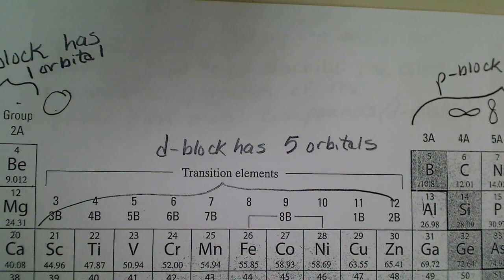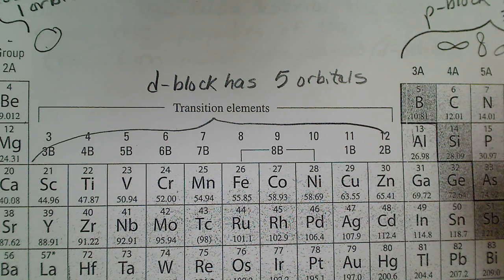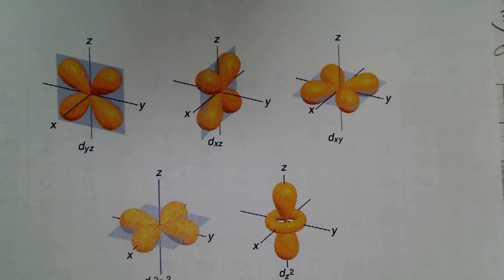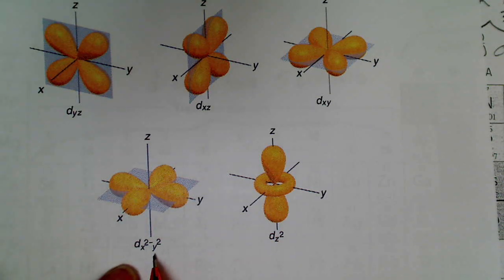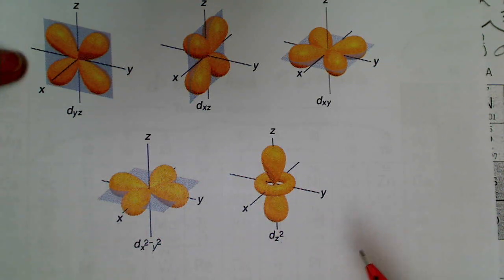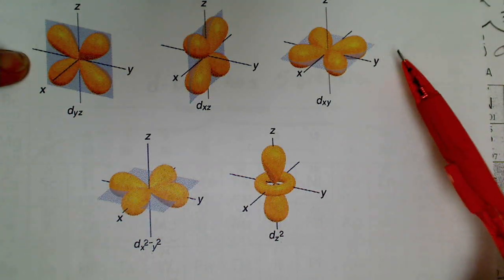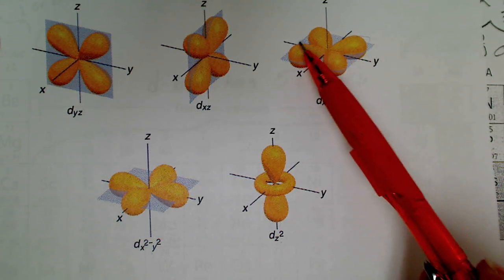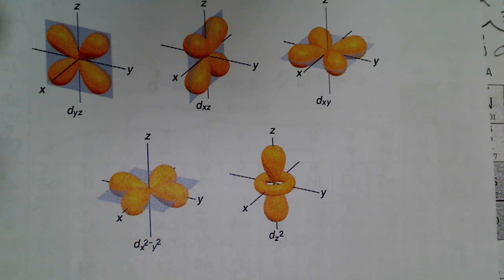The d block has five orbitals, each with different shapes. Two orbitals of particular importance are the dx²-y² orbital and the dz². The other three d orbitals each have four lobes lying in the plane, and their lobes do not point along the x or y axis — which is important when we look at octahedral geometry.